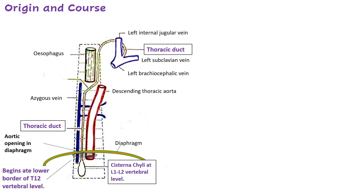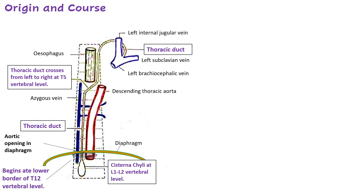The thoracic duct ascends until the junction of T4 and T5. At the upper border of T5 it crosses to the left side, passing behind the esophagus, and then ascends in the superior mediastinum to the left of the esophagus. It passes through the thoracic inlet to reach the root of the neck, turns laterally, lying behind the carotid sheath, and opens at the junction of the left internal jugular vein and left subclavian vein.